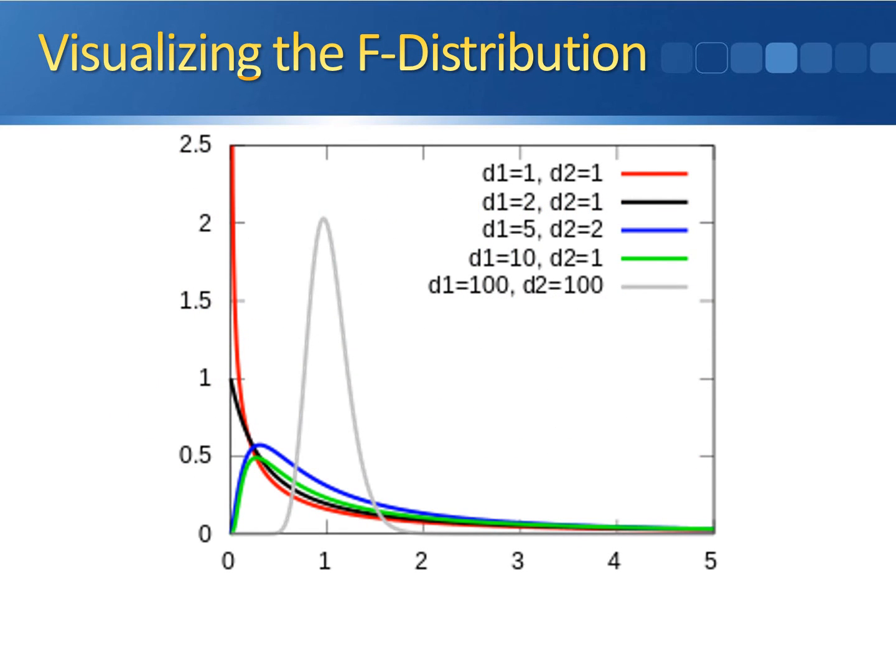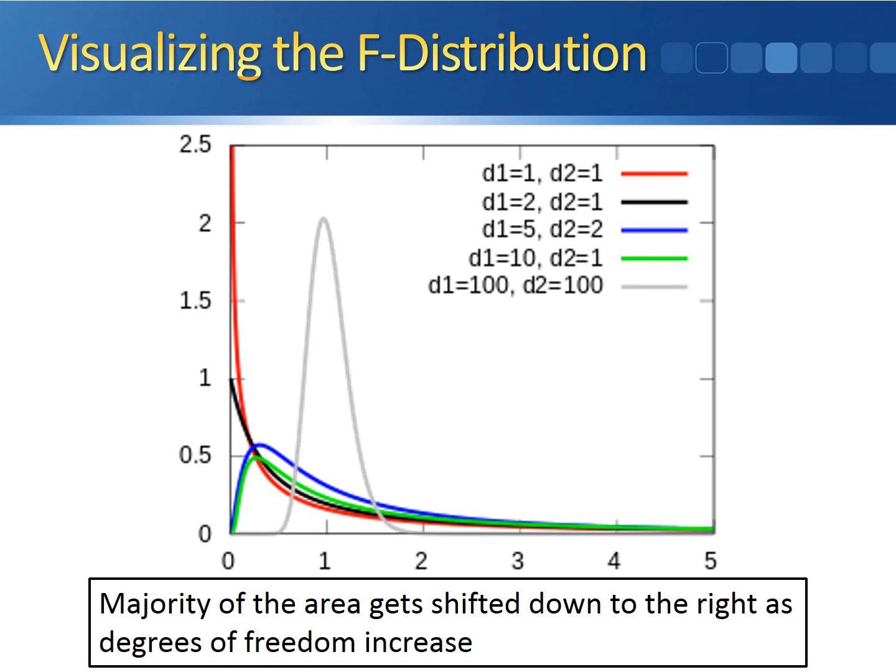Here's a visual of the F-distribution. A majority of the area does get shifted down to the right as the degrees of freedom increase. However, since there are two parameters for the degrees of freedom, the pattern by which it shifts can be a little bit difficult to detect.